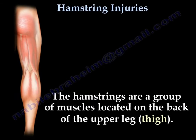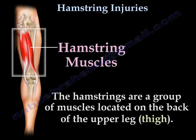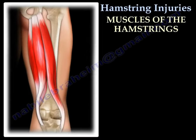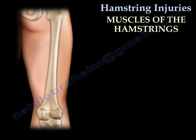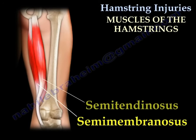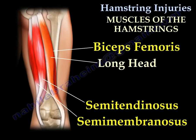The hamstrings are a group of muscles located on the back of the thigh. The muscles of the hamstrings are the semimembranosus, the semitendinosus, and the biceps femoris, which has a long head and a short head.